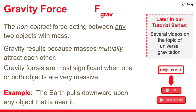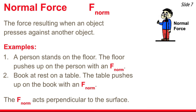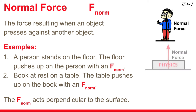Here's an example of a gravity force: the earth pulls downward upon any object that is near it. Now let's talk about normal force, represented by the symbol F-norm. This is the force that results when an object presses against another object in its surroundings. For example, a person stands on the floor — the floor pushes up on the person with a normal force because the feet and the floor are pressed together. Similarly, a book at rest on a table causes the table to push up on the book with a normal force.